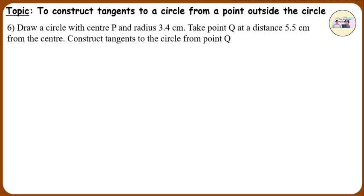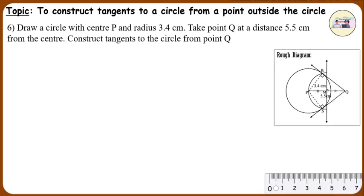Analysis: Triangle PRQ and triangle PSQ are right angle triangles, and segment PQ is their common hypotenuse. If we draw a circle with diameter PQ, then the points where it intersects the circle with center M will be the positions of points R and S respectively, because the angle inscribed in a semicircle is a right angle.